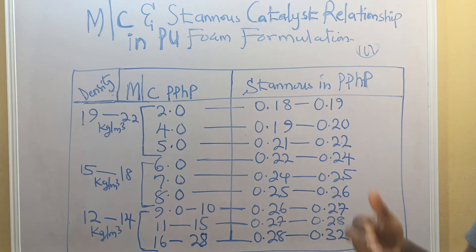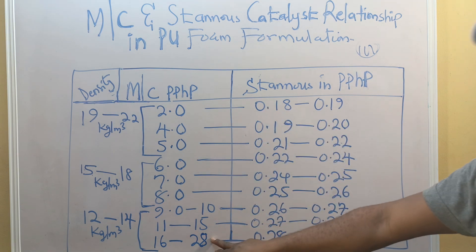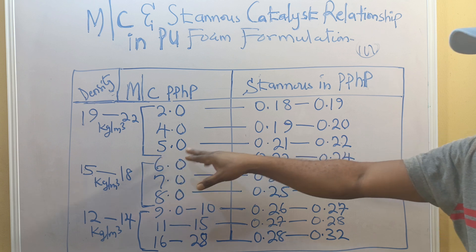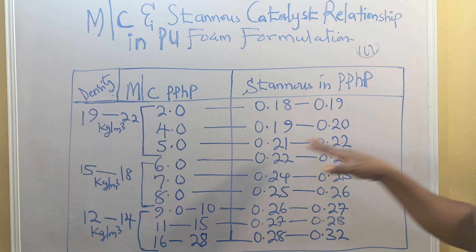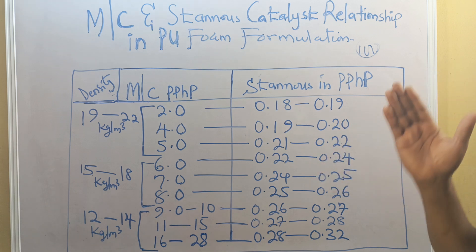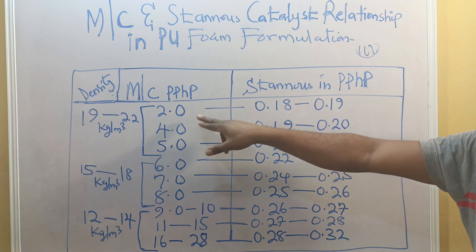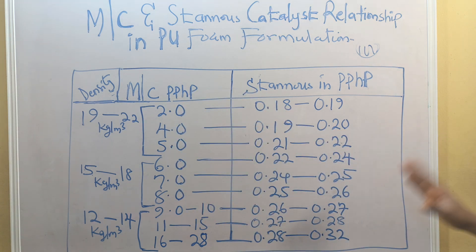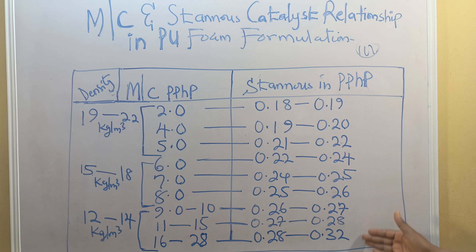Methylene chloride attacks the behavior of the tin catalyst. If you use it in reverse, the foam collapses. For example, at 28 parts of MC, if you choose only 0.18 of stannous catalyst, you will have collapse because the cross-linking process will be too low. The stannous catalyst takes part in the phase reaction where polymerization occurs — forming urethane, the building block from the reaction between TDI and polyol. Tin catalysts are there to cross-link the reaction between TDI and polyol.